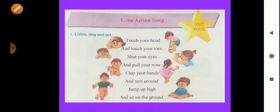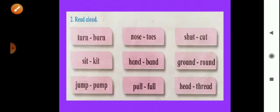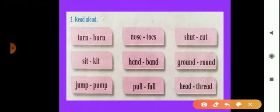Now below this poem there are some words. I will read them — you listen carefully. In the first box: T-U-R-N, turn, and B-U-R-N, burn. These are rhyming words. Turn, burn — these are rhyming words.